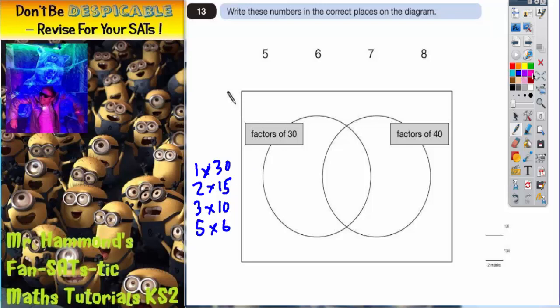Factors of 40 you could have 1 times 40, 2 times 20, 3 won't go into 40 but you could have 4 times 10, and 5 will also work, you could have 5 times 8. So now we've listed the factors of 30 and 40, this should make it nice and simple.